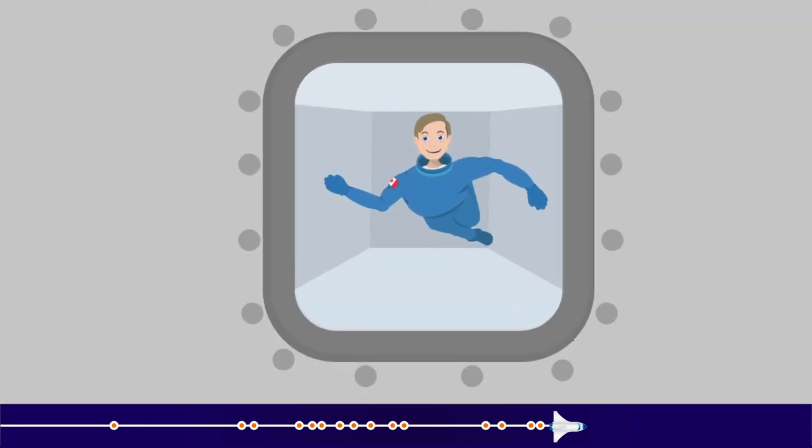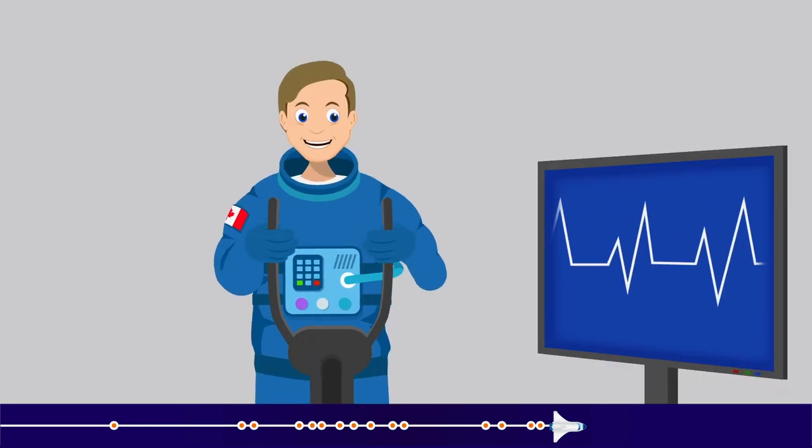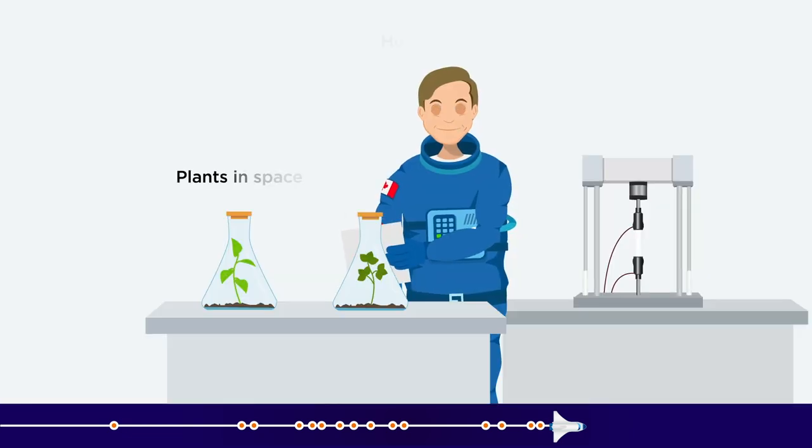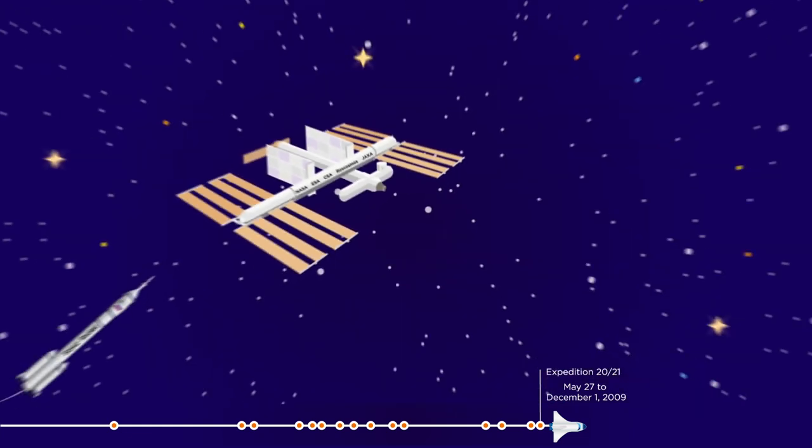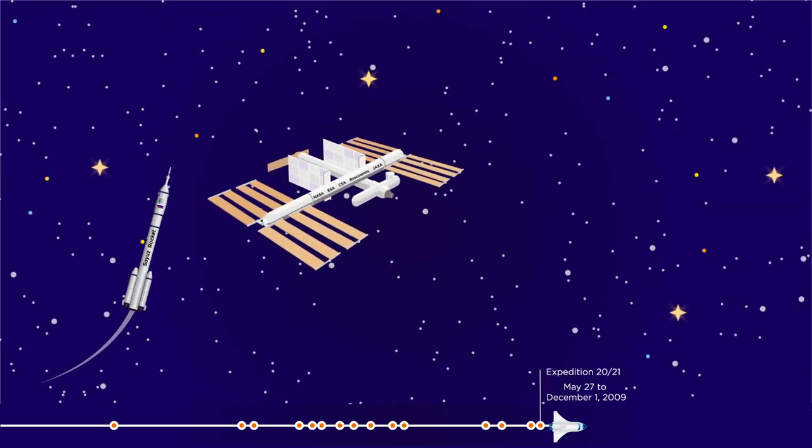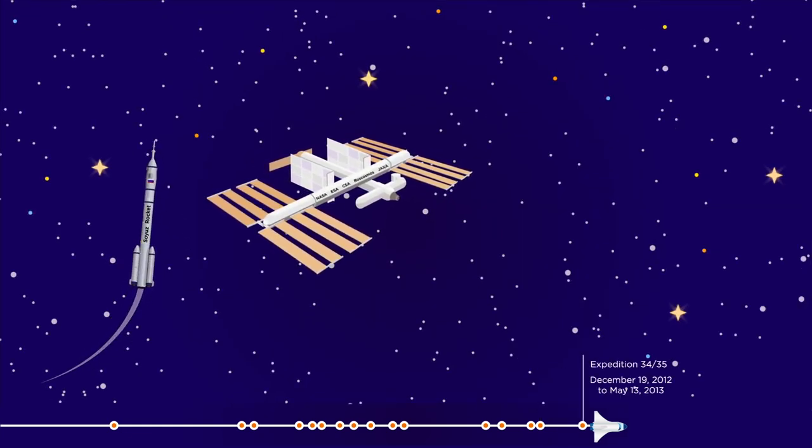Robert Thirsk was the first Canadian astronaut to live and work on board the ISS in 2009. This mission lasted for several months, providing an opportunity for the first long-term microgravity experiments. Thirsk was also the first Canadian to travel aboard the Russian Soyuz vehicle.